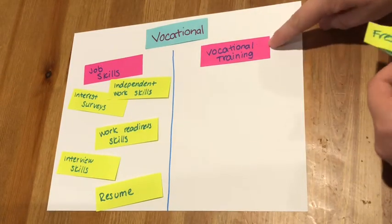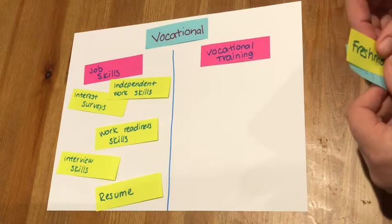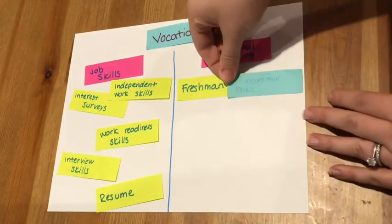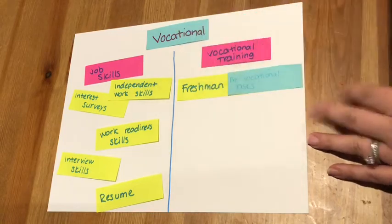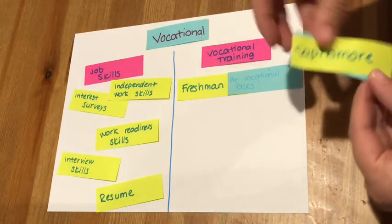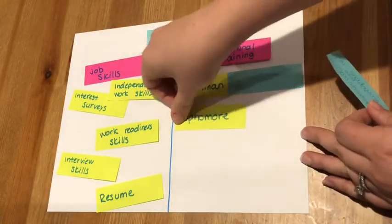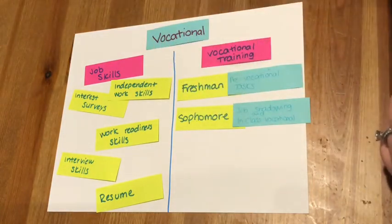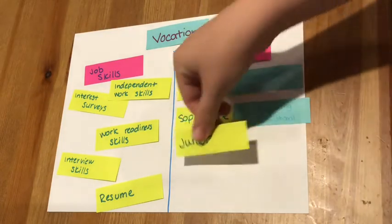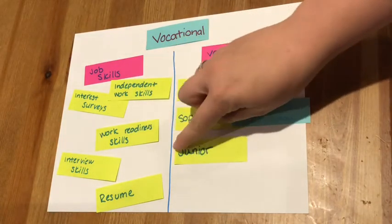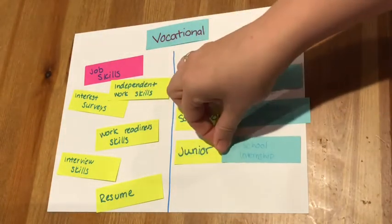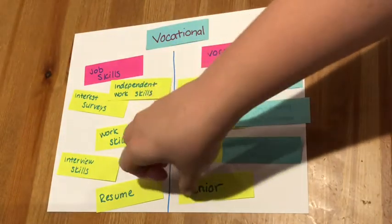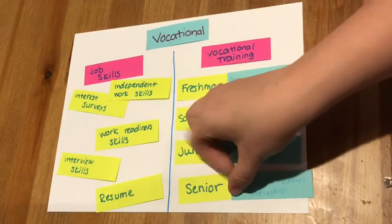Within vocational training we do something different for each year. For your freshman year your focus is going to be on pre-vocational tasks. For your sophomore year the focus will be on job shadowing and in-class vocational training. For junior year the focus is going to be on in-school internships. And for your senior year the focus is going to be on out-of-school internships.